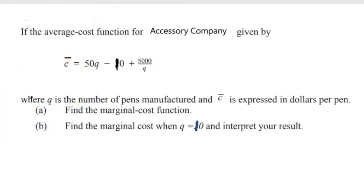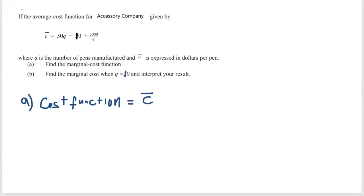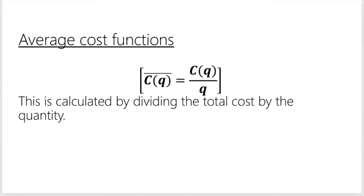Now the question states, if the average cost function for accessory company is given by C-bar equals 50Q minus 10 plus 5000 over Q, where Q is the number of pens manufactured and C-bar is expressed in dollars per pen. I need to find the marginal cost function, then find the marginal cost when Q equals 10. Now if you realize you're given the average cost function, that's different from the previous activity. I have to multiply this by Q to get my cost function using this formula.